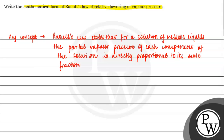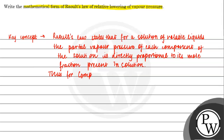Raoult's law says that if we have a solution of volatile liquids, the partial vapor pressure of each component of the solution — whether solute or solvent — will be directly proportional to the mole fraction present in the solution. Thus, for component 1: P1 is directly proportional to the mole fraction of 1, so P1 equals the vapor pressure of pure component 1 multiplied by its mole fraction.